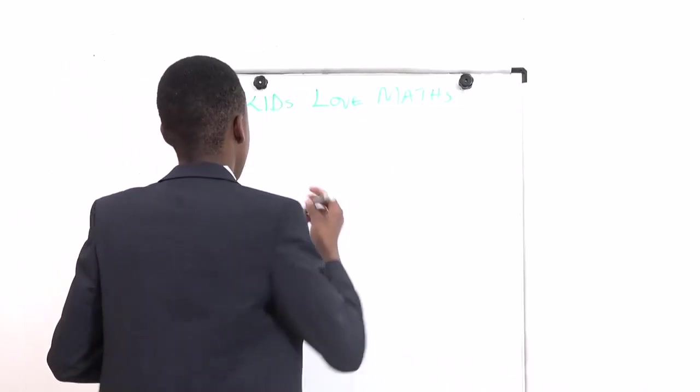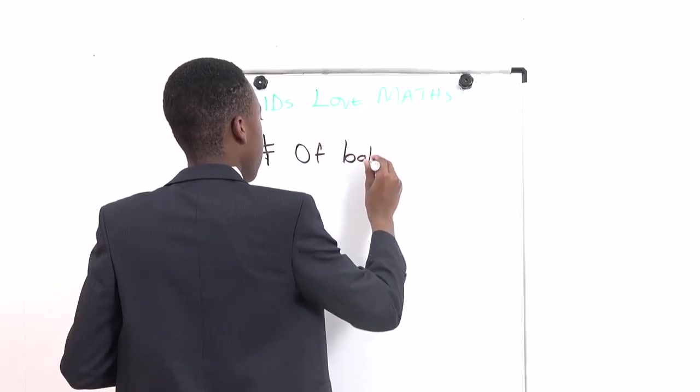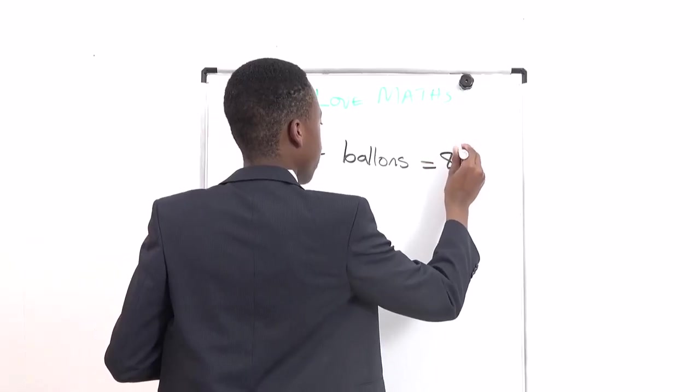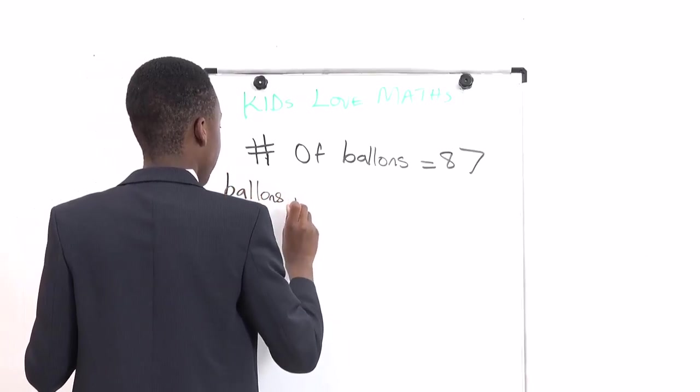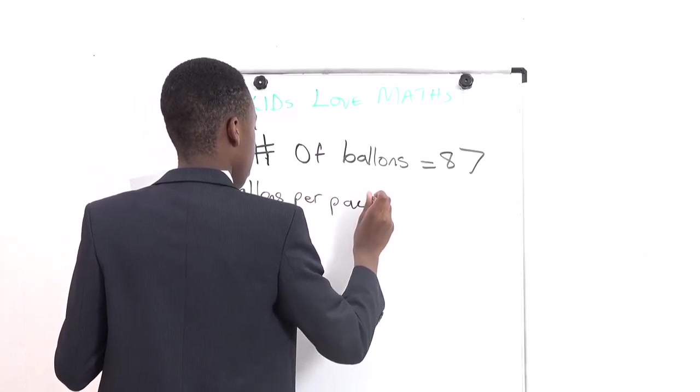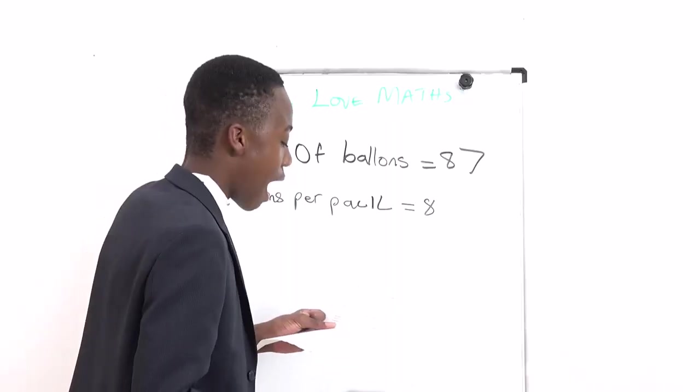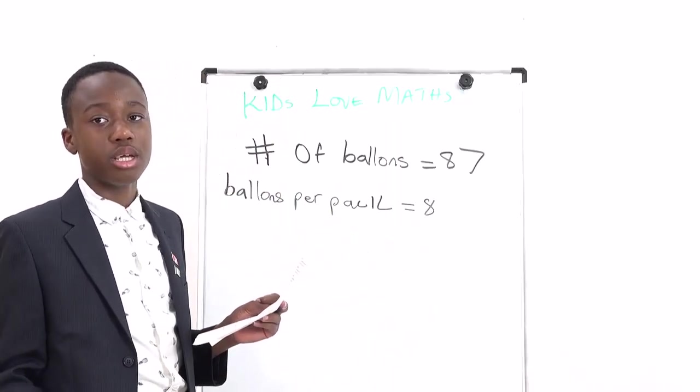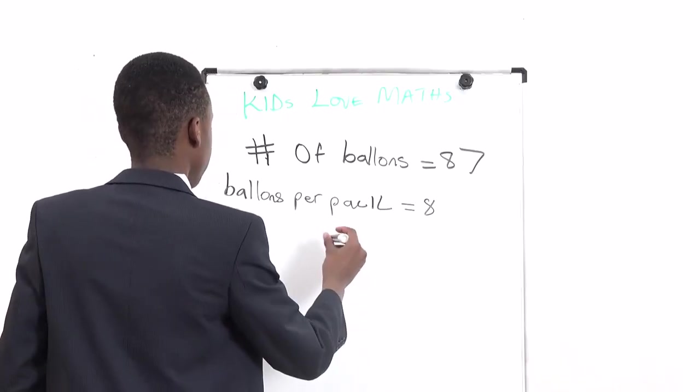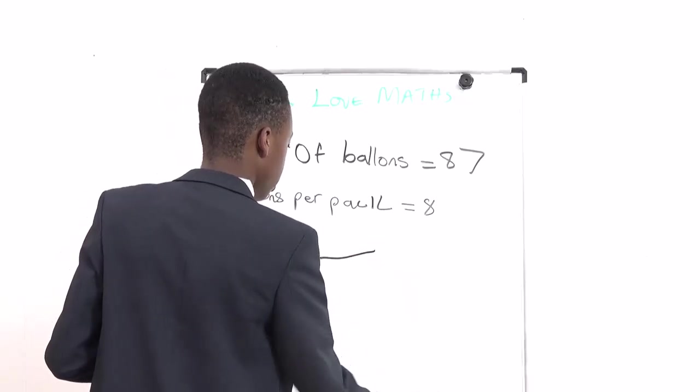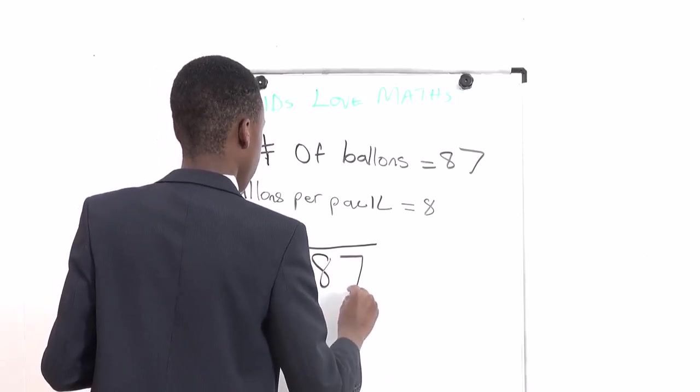So they said that Emily has a number of balloons which is 87, and balloons per pack is 8. So 8 balloons in each pack. How many packs can she make is the question, but they also asked how many balloons will be left. Using long division we should be able to solve this.